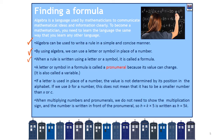Algebra is how we write a rule or formula in a simple manner. We use a letter or symbol in place of a number. When we use a letter or symbol we generally refer to it as a formula, and the letter or symbol — often X — we refer to as a pre-numeral or sometimes a variable.